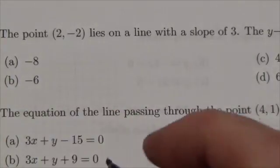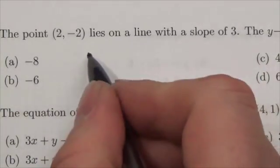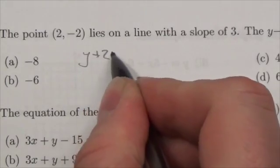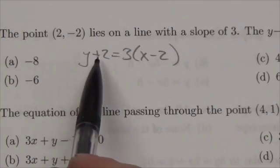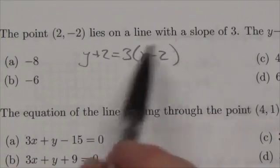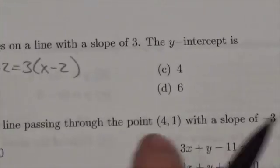We know the slope and a point that it goes through, so the easiest thing to do is put this in point-slope form: y + 2 = 3(x - 2). That's plugging in the point and the slope.